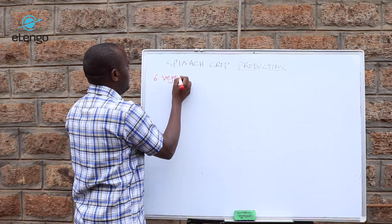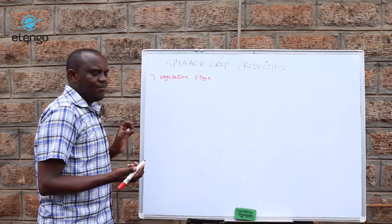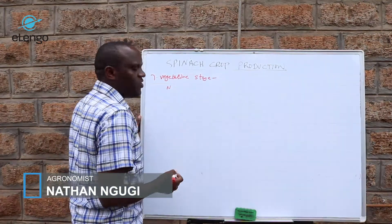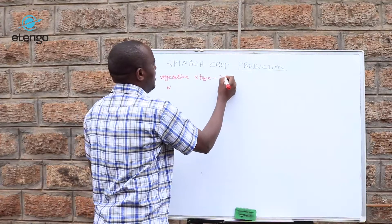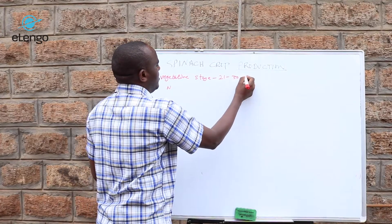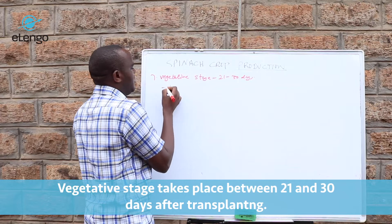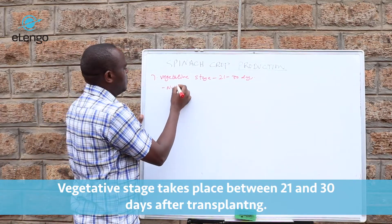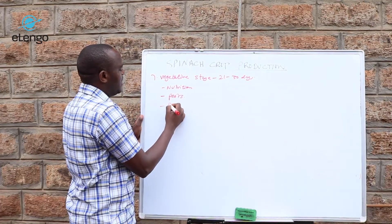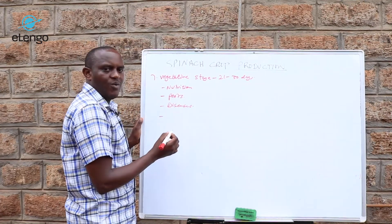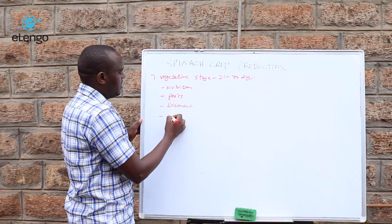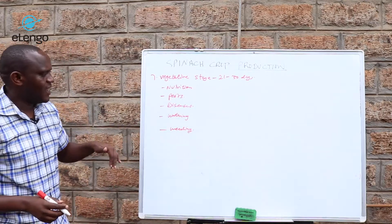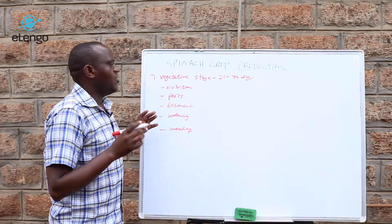We are talking about the vegetative stage, which is 21 to 30 days. Here we are going to look at the nutrition, then we are going to look at the pests, we look at diseases, and we are also going to look at watering and also weeding. Those are the aspects we are going to look at in the vegetative stage.